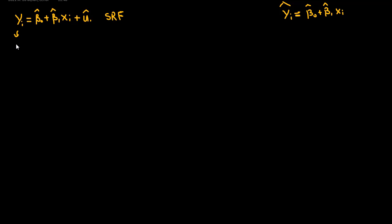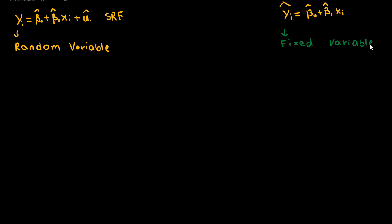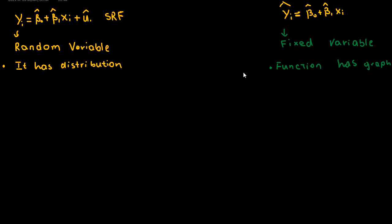My dependent variable in the sample regression function, y_i, is the random variable. The predicted line ŷ_i is the fixed variable. The random variable has a distribution and they have a graph showing that. However, the fixed variable has a function, and that function has its own graph.